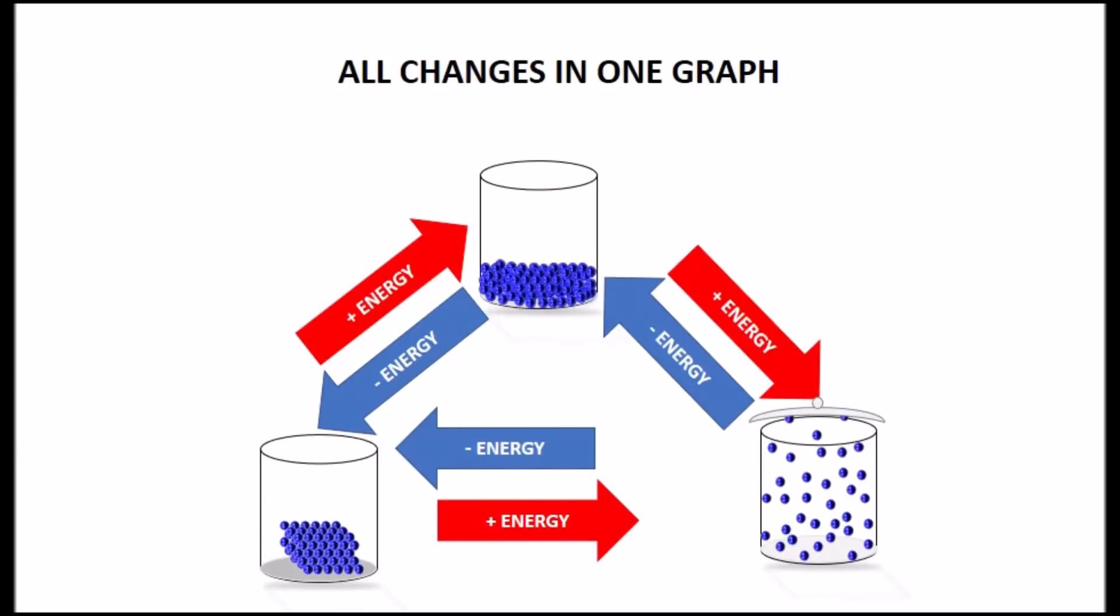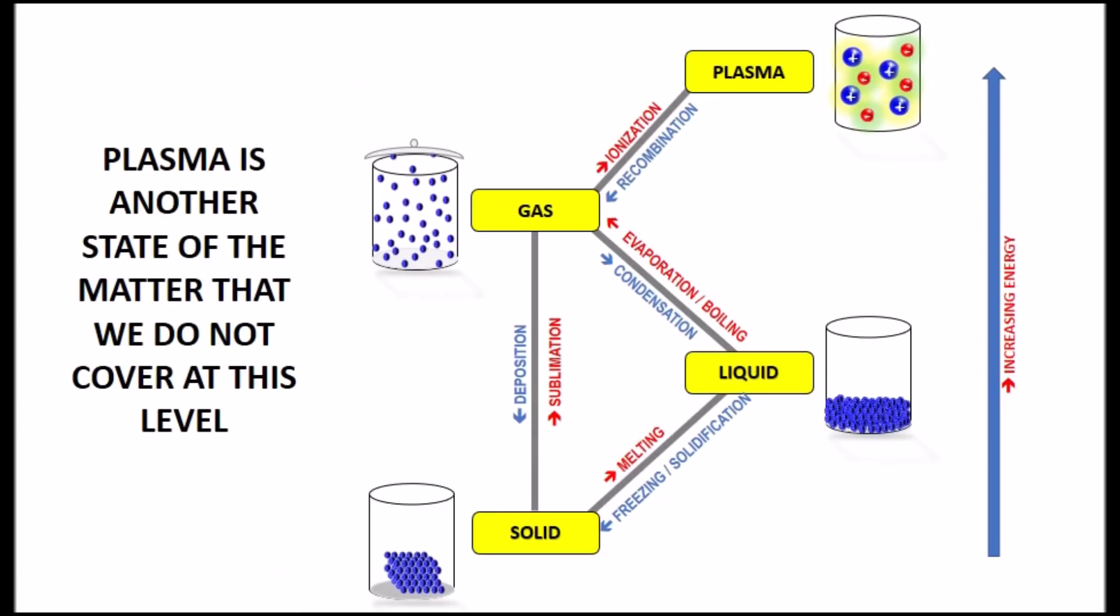Now you can better understand the graph from before, where all the changes in state of matter are shown. Name them and show which ones release energy or require external energy to take place. This is another way of showing the changes in state of matter, where the ones at the top have more internal energy than the ones at the bottom. I included plasma, although it's not necessary, and the names for the changes in each process.